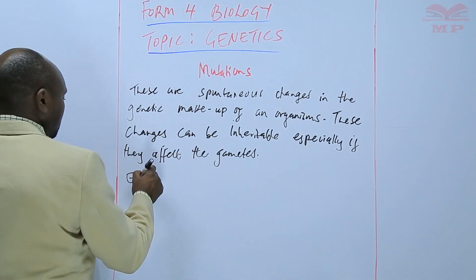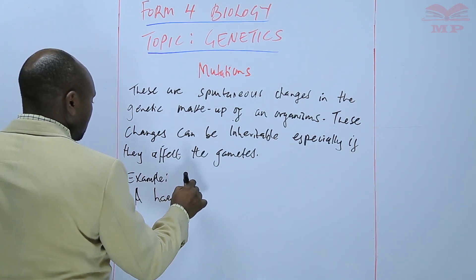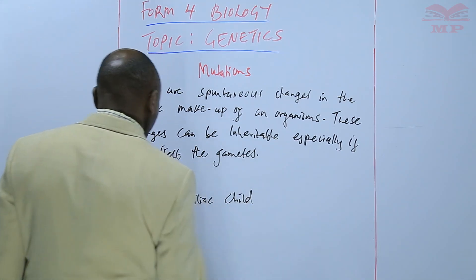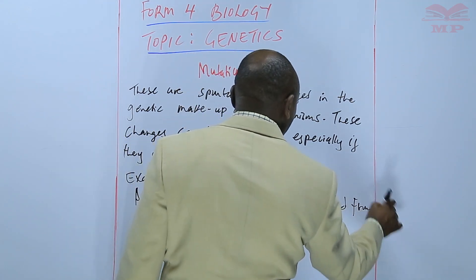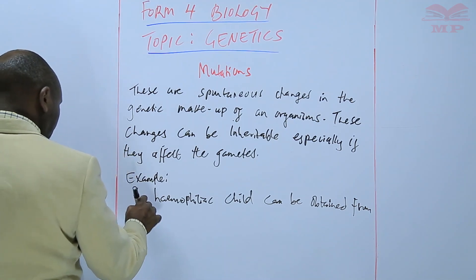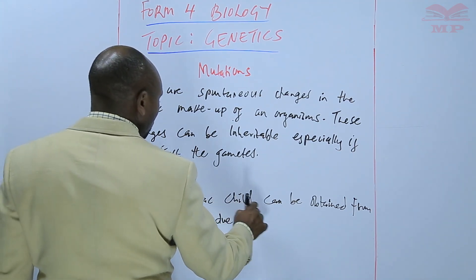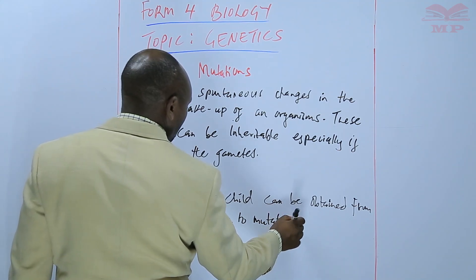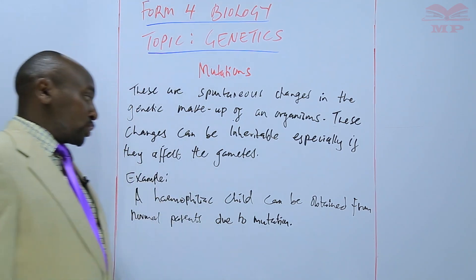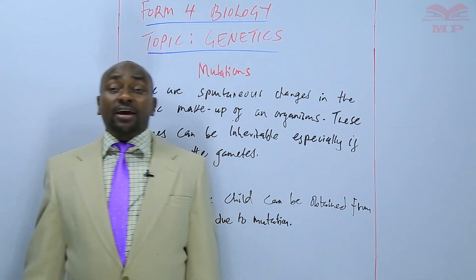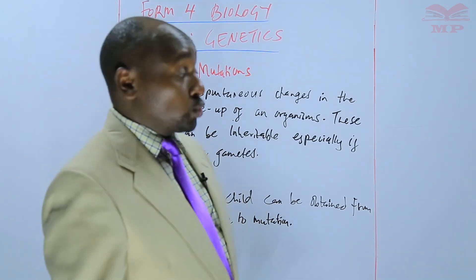For example, a hemophiliac child can be obtained from normal parents due to mutation. It is not automatic that if the parents are normal, then the child will also be normal. There could be some mutations that have taken place in the parents, and those mutations can be transmitted to the child.